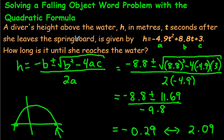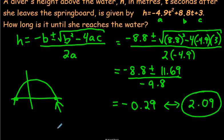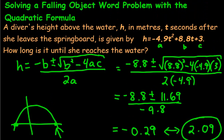So one of the answers makes sense and at this point you would write a sentence right here, and the sentence would say this: the diver, how long is it until she reaches the water? It takes her 2.09 seconds to reach the water, something like that. And then you're good to go, and that is how you solve a question like this using the quadratic formula.